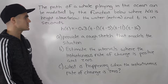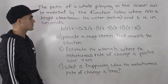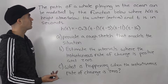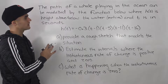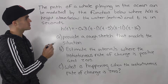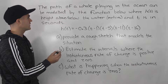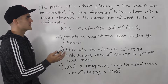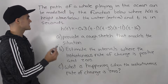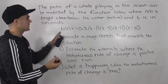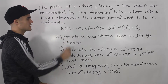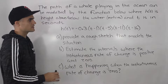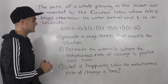Welcome back everybody. Moving on to another question in this section — another word problem. The path of a whale playing in the ocean can be modeled by the function h(t), where h(t) is the height above and below the water in meters and t is in seconds. The function is: h(t) = -0.3(t-1)(t-5)(t-11)(t-16).